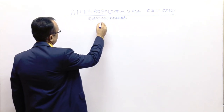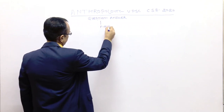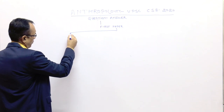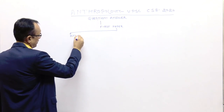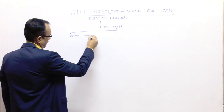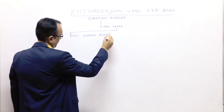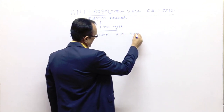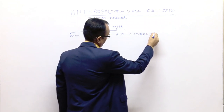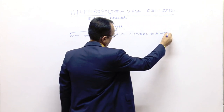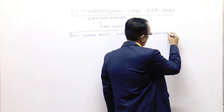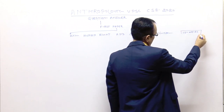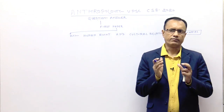This question is from Paper 1, question number 1C. The question is: Human Rights and Cultural Relativism. We have to write this answer in 150 words, because this question belongs to the short notes category.